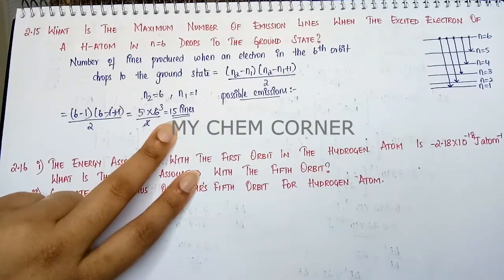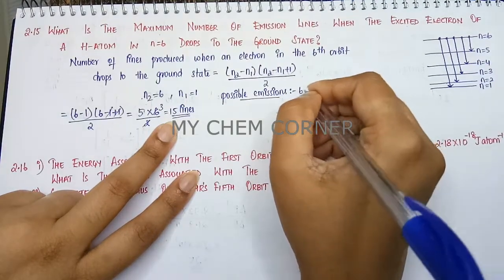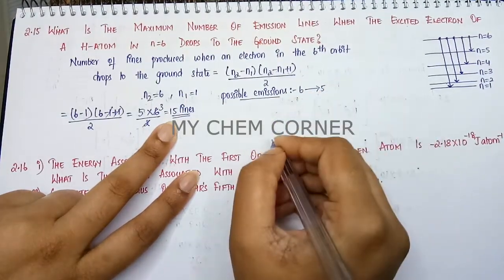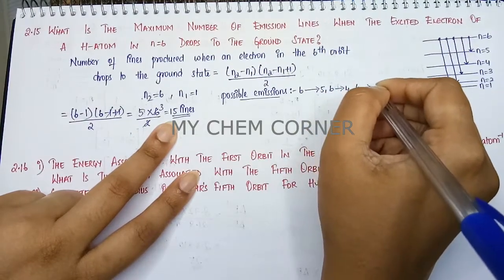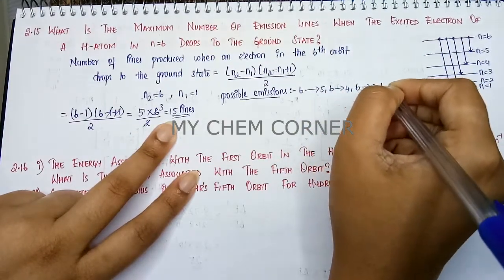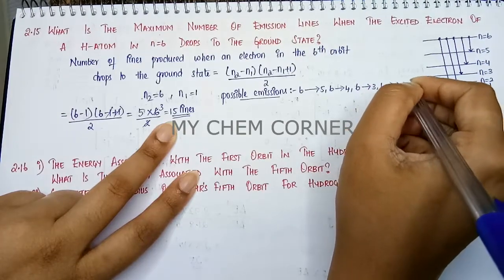So here from 6 it can fall to any possible lines. So we can say that the transition can be from 6 to 5, from 6 to 4, 6 to 3, 6 to 2, 6 to 1.